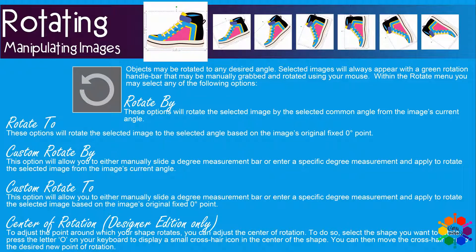Now you have a few options here. The first one is Rotate By. These options will rotate the selected image by selecting a common angle from the image's current angle.